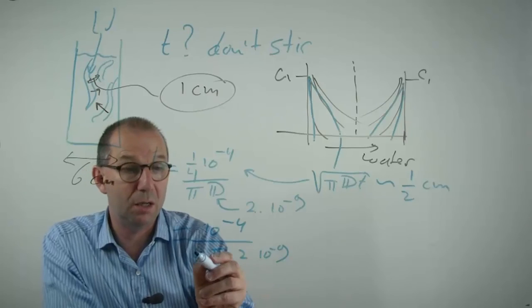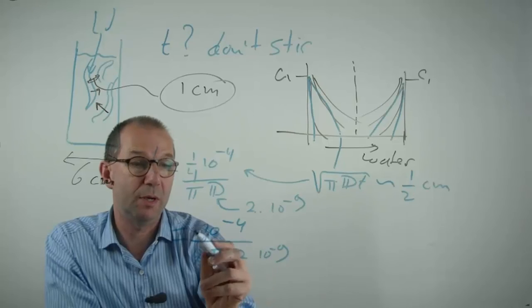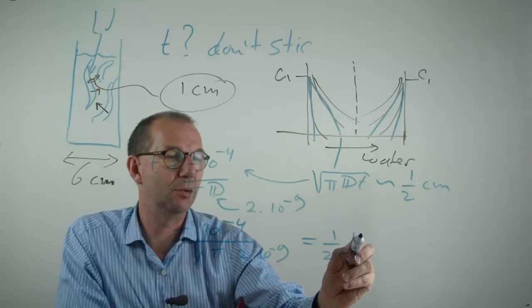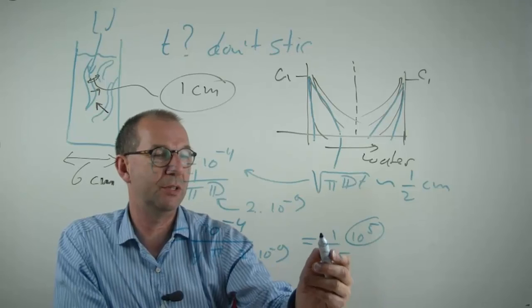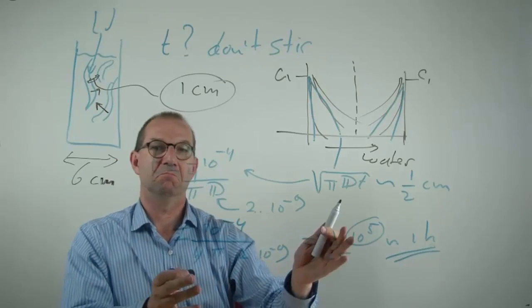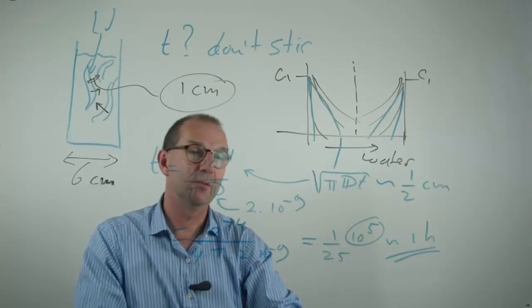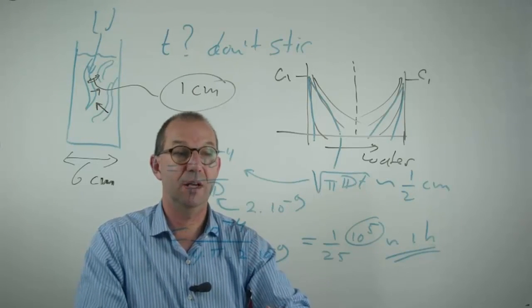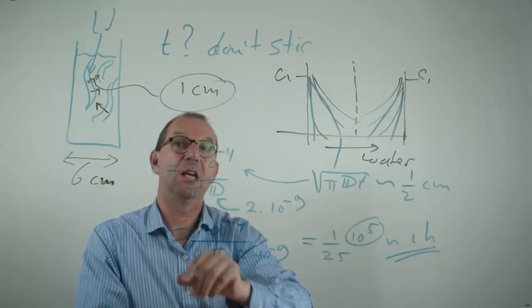These together are roughly 4, 12, 25. So this is 1 over 25 times 10 to the fifth. 10 to the fifth seconds is on the order of a day. It is about one hour. See? Calculations can be done with this elementary reasoning only knowing diffusion, penetration depth, not even needing a calculator. If you want a fresh drink, stir it.